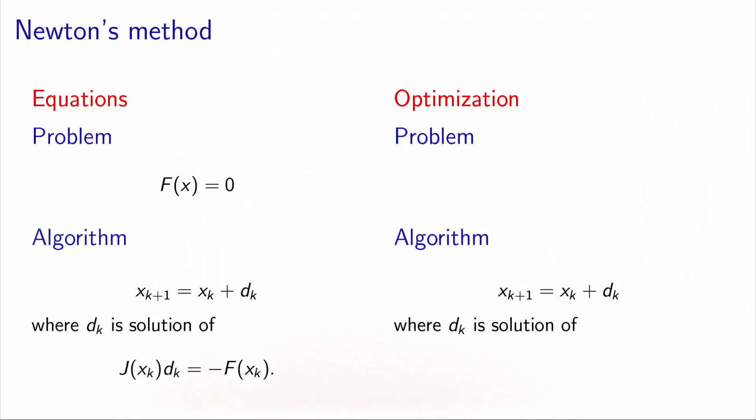So on the left column, you see the description of Newton's method for solving a system of equations, capital F of x equals zero. The algorithm is an iterative algorithm that calculates at each iteration a direction dk that is used to update xk. And dk is calculated by solving a linear system of equations defined by J(xk) times dk equals minus f of xk.